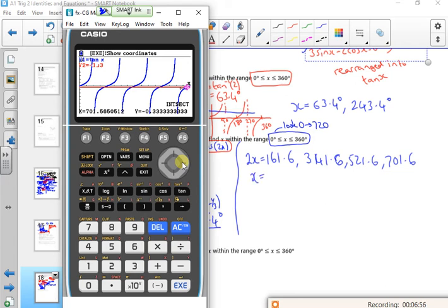Divide by 2 now, I'll get, what will I get? 80.8. I'll get 170.8, 260.8, 350.8 degrees. So that's the long-winded way you're doing it.